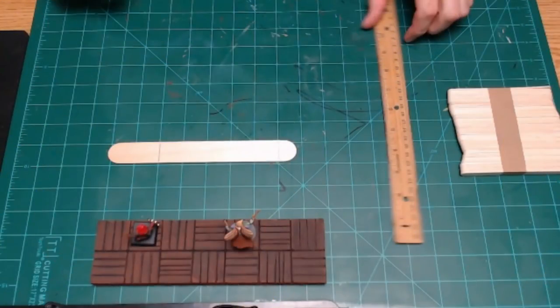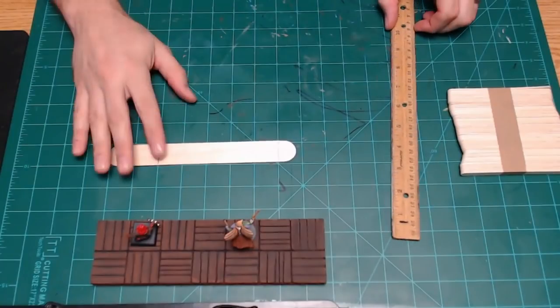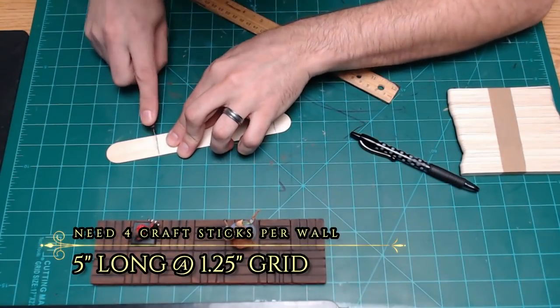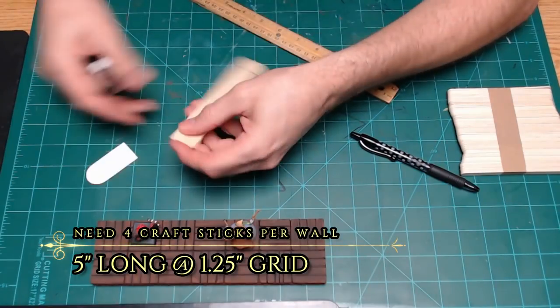Hey everyone, we're going to start this build with craft sticks. You're going to need four of them for each section of walls you build. They're going to need to be five inches long.